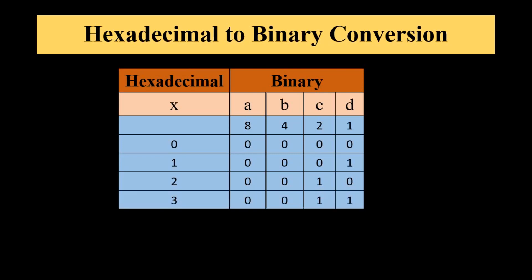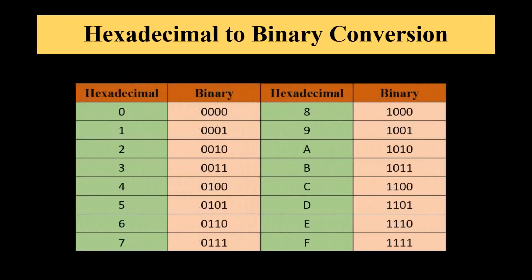Next digit 3. It is the sum of 2 and 1, so we need to put 1 at the place of C and D. Equivalent binary number is 0011. Like that, every digit has an equivalent 4-bit binary number. So this is the table.